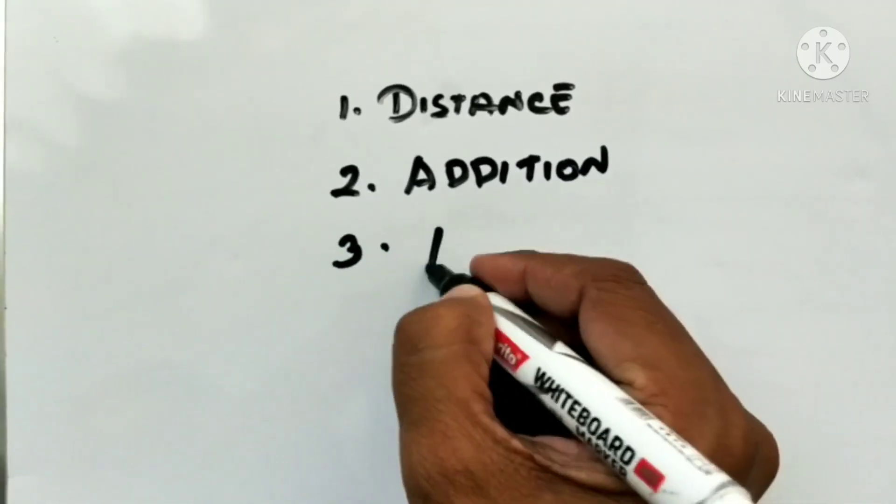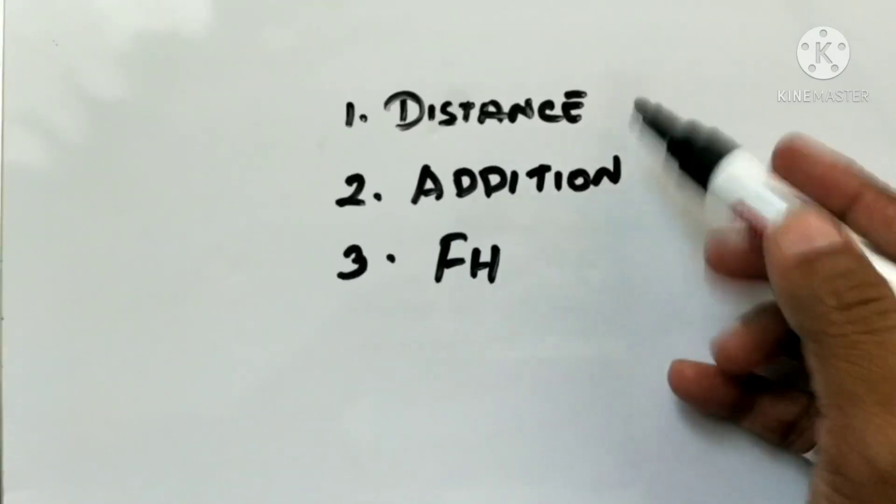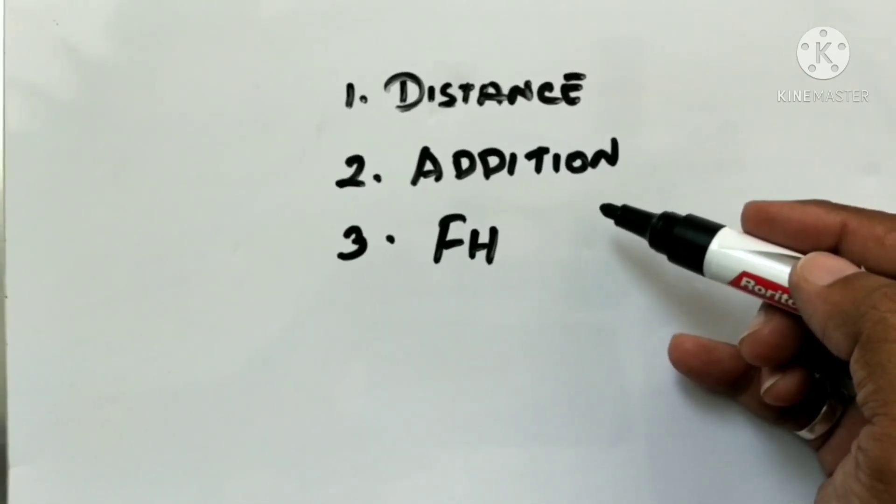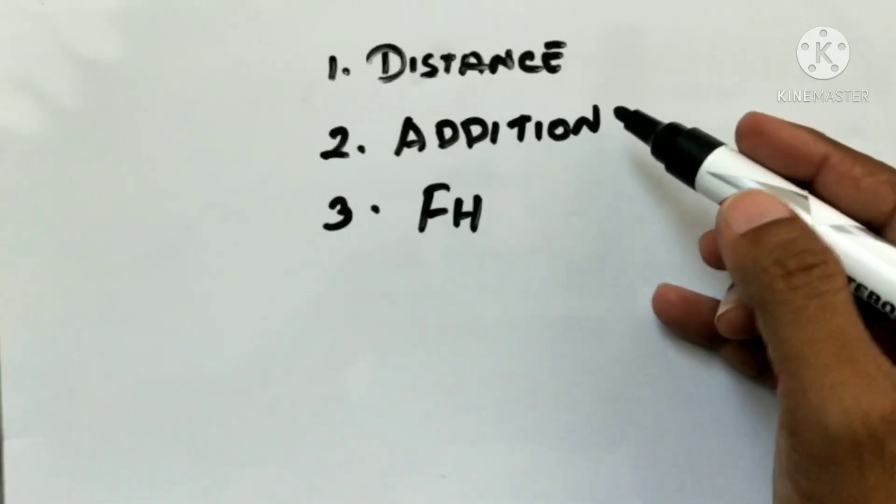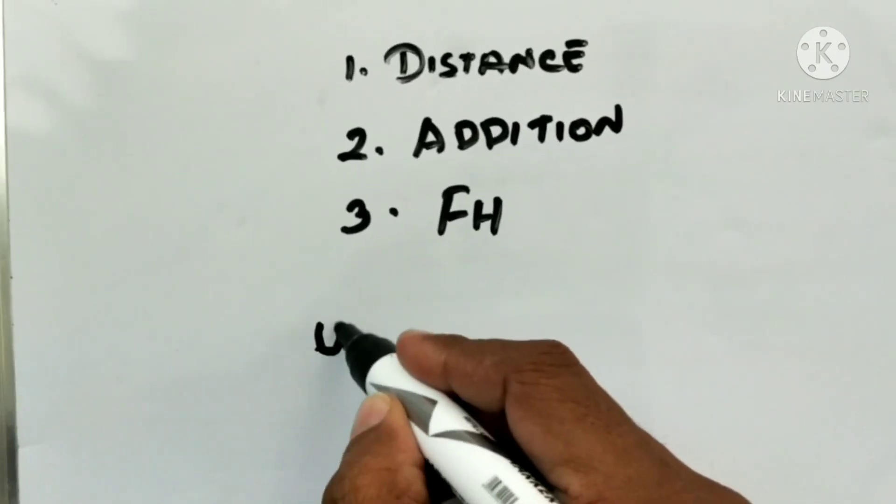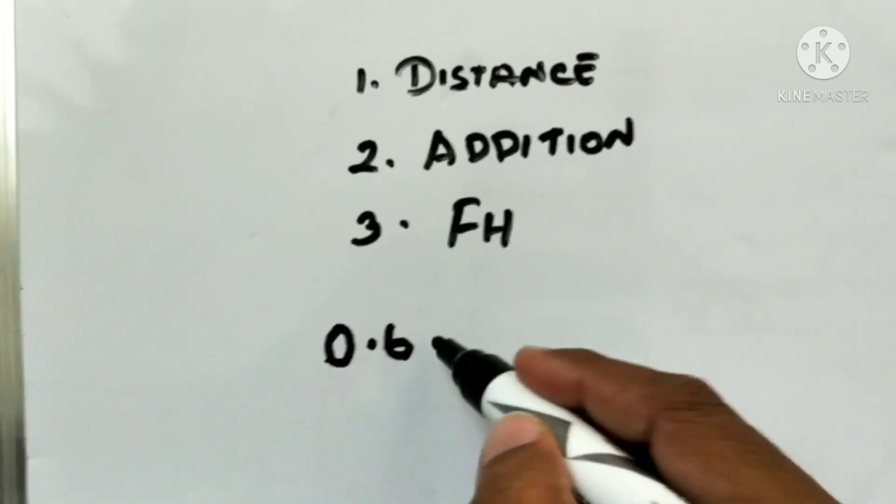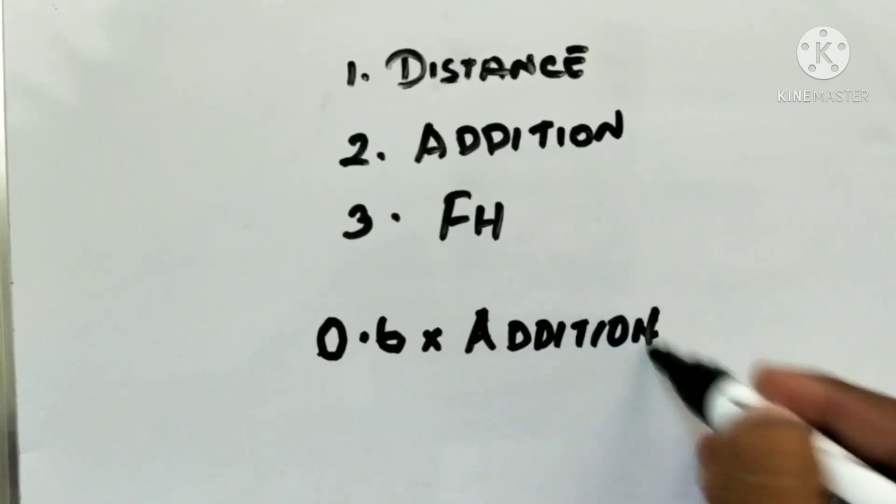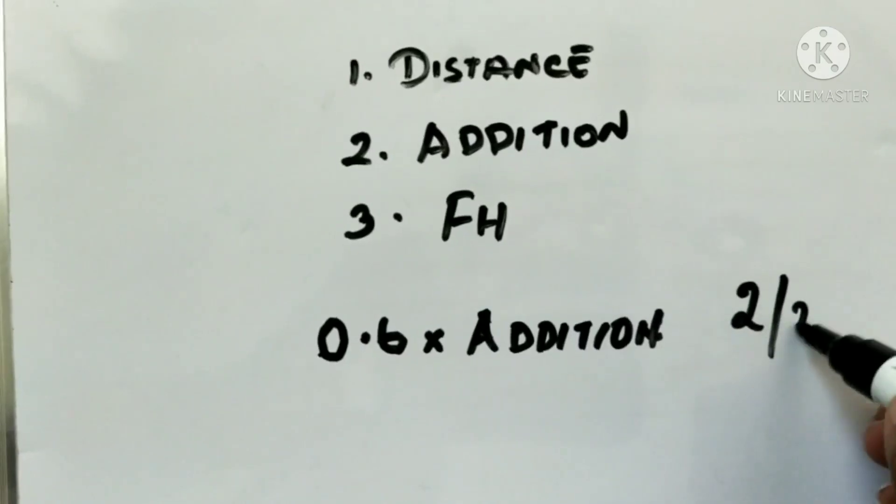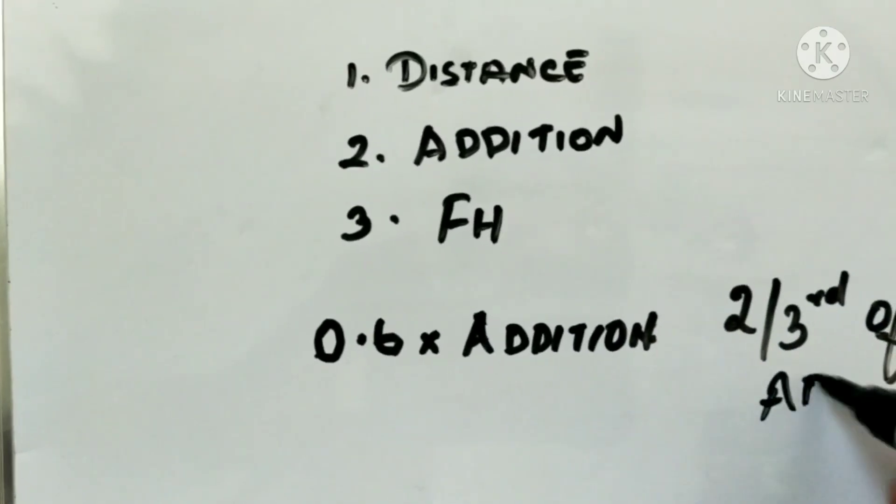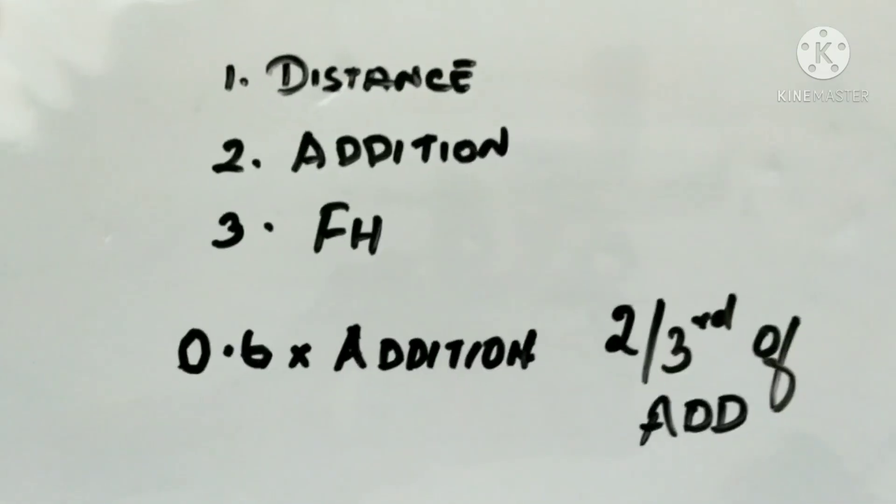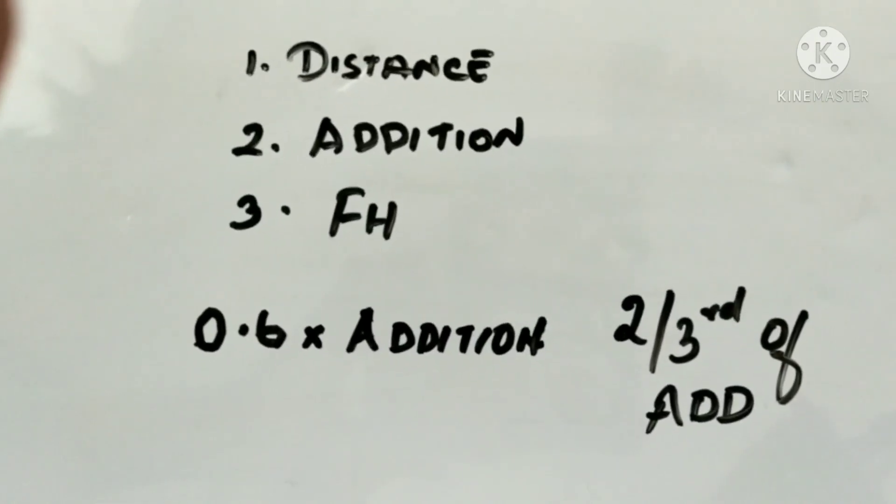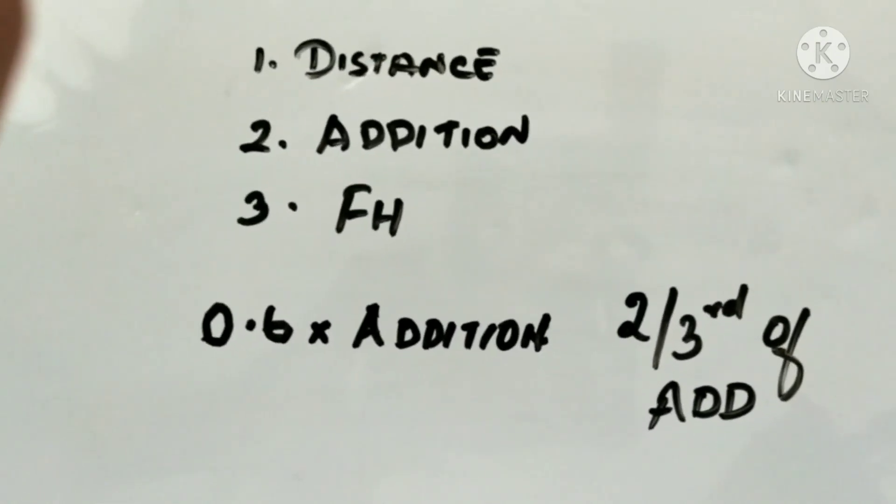Number three will be your fitting height. These are the major points to keep in mind. The simple formula used by manufacturers is 0.6 into addition. This is the amount of prism done on the progressive lens, or we call it two-thirds of the addition power. This is the amount of prism grounded on progressive lenses to ensure that lenses shed off the additional thickness and weight that is there because of the profile.